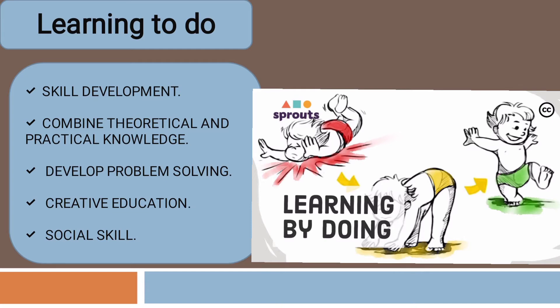The next one is combining theoretical and practical knowledge. In education, the child is able to acquire both theoretical and practical knowledge. The next one is developing problem solving — this is an education where the child can solve their problems themselves, building their thinking, learning, and understanding level.